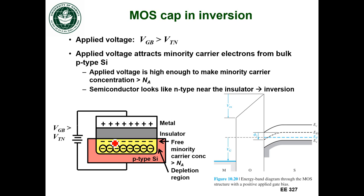I'm building up those free electrons right at that interface, so I have some free charges here in the depletion region. Right at this surface, the free minority carrier concentration is greater than my acceptor doping concentration — and that's inversion. It's exactly the opposite of what I had in equilibrium.